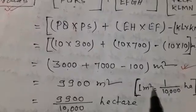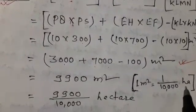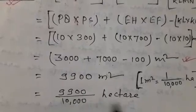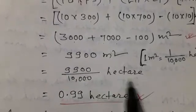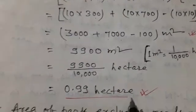As we know, 1 meter square equals 1 by 10,000 hectare. So we convert this into hectares: 9900 by 10,000 hectare equals 0.99 hectare.